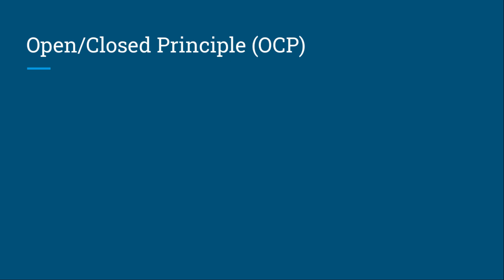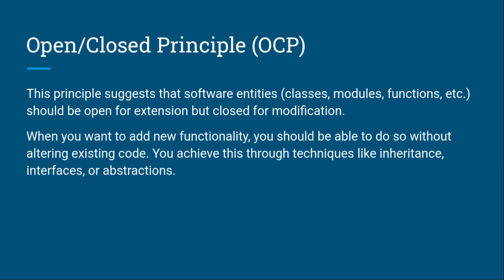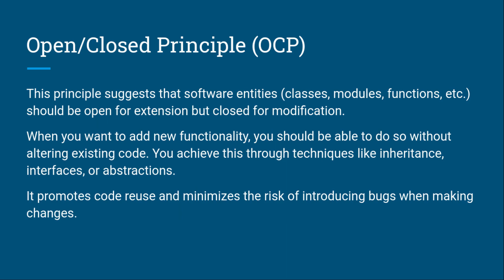Now let's talk about the Open-Closed Principle, or OCP. This principle suggests that software entities — classes, modules, or functions — should be open for extension but closed for modification. When you want to add new functionality, you should be able to do so without altering existing code. You achieve this through techniques like inheritance, interfaces, or abstractions, which promotes code reuse and minimizes the risk of introducing bugs when making changes.